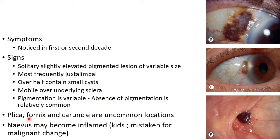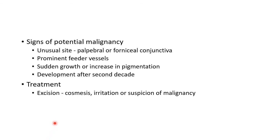Uncommon locations of conjunctival nevus include plica, fornix, and caruncle. Conjunctival nevus may become inflamed, especially in children, which can be mistaken for malignant change. Signs of potential malignancy include presence of the nevus in an unusual site such as palpebral or fornicial conjunctiva.